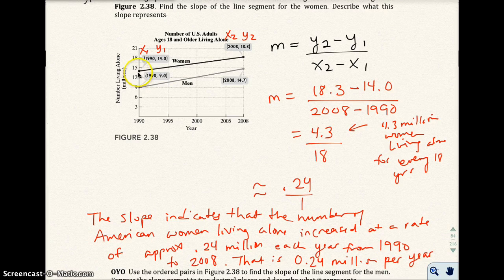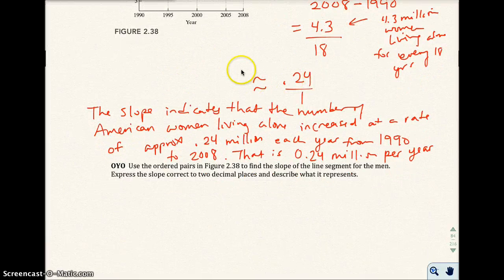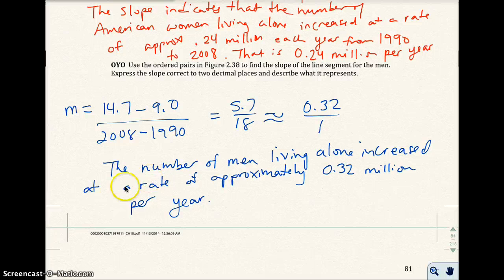So from one year to the next, it went up about 0.24 million. There are no homework problems over this, but understand how to interpret slope in real-world problems. Do the same for the line segment for men — pause and check your answer. The slope for men is approximately 0.32 over 1, meaning the number of men living alone increased at a rate of approximately 0.32 million per year. That takes us to the end of this section.